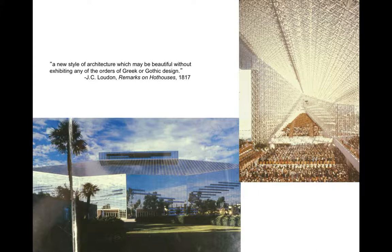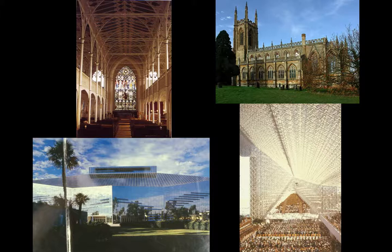For our purposes, Loudon starts the clock ticking in 1817: quote, 'A new style of architecture which may be beautiful without exhibiting any of the orders of Greek or Gothic design.' Modernism is born and we're off and running — we no longer need to copy the architecture of the past. This is what I mean by saying that progress is a two-step process: Rickman constructed traditional Gothic churches using cast iron; Repton also was using the new material in a traditional form but did show us what might be possible; but it will be Loudon within a year later who gives us the future. And none of these three were architects — we have one historian and two landscape architects all telling us where architecture is going to go.